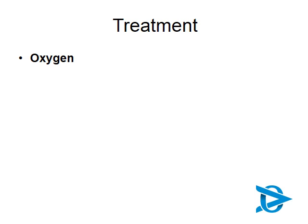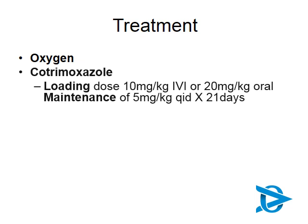Treatment for PCP is relatively straightforward. First, get the child onto oxygen. Use co-trimoxazole at high dosages: a loading dose of 10 mg/kg IV or 20 mg/kg oral, followed by a maintenance dose of 5 mg/kg four times a day for a full 21 days. Expect to see a response to treatment within three to four days — longer than with bacterial pneumonia — which is why it's so important to support the respiratory system while waiting for the treatment to take effect.